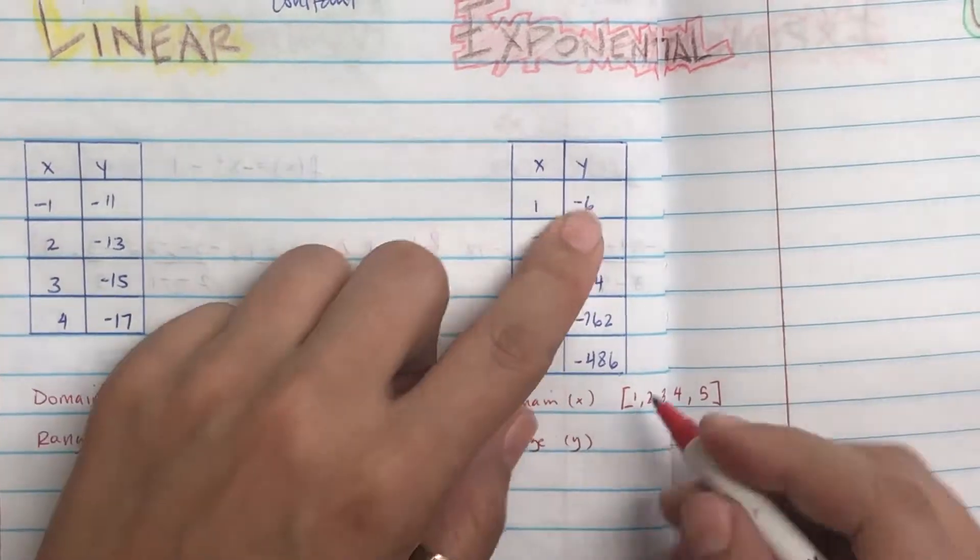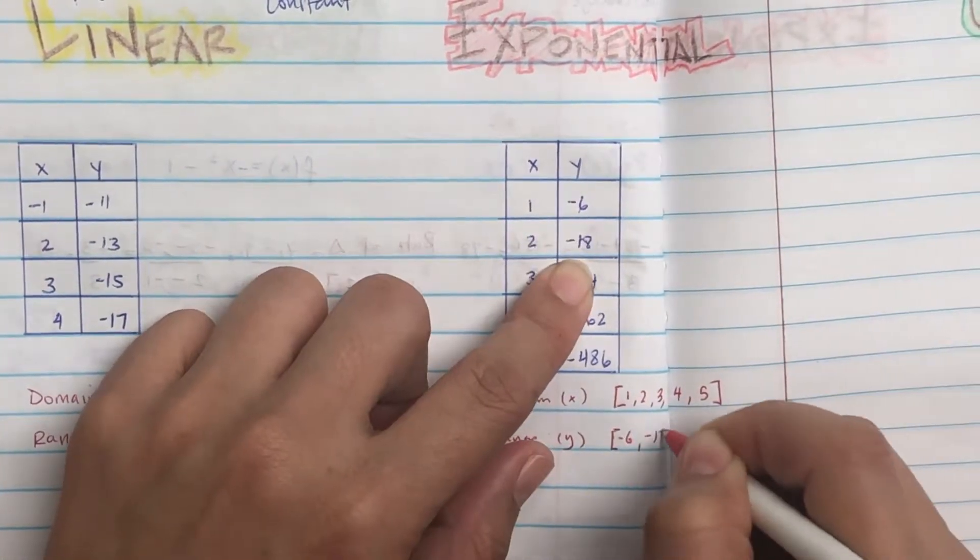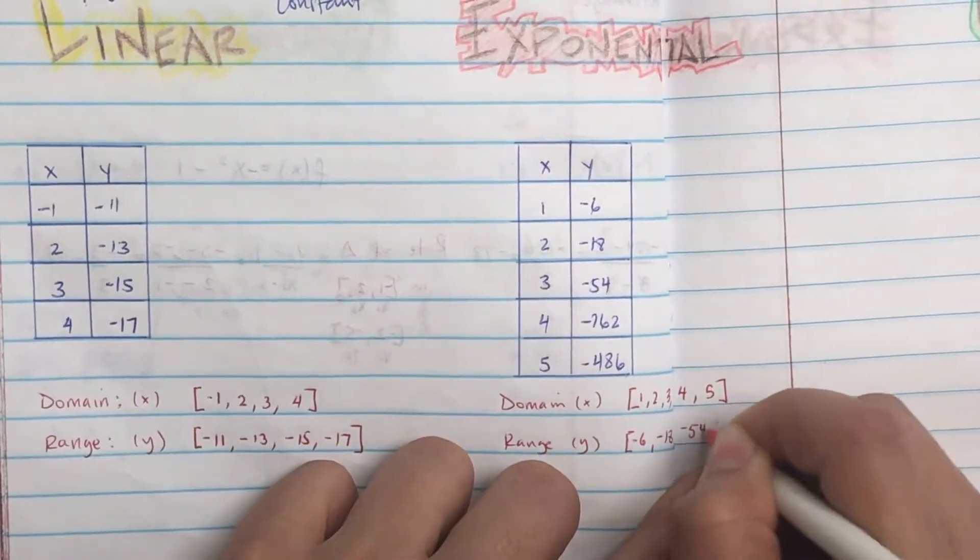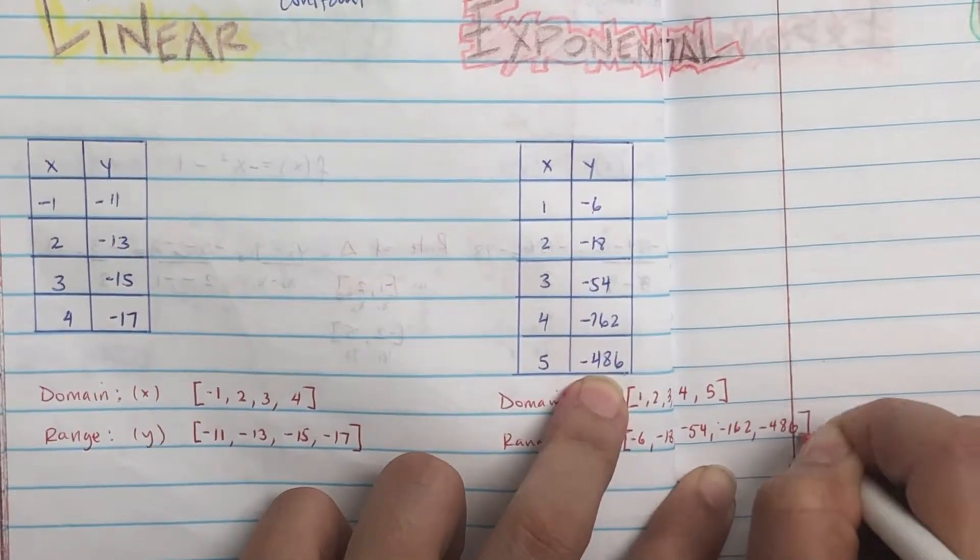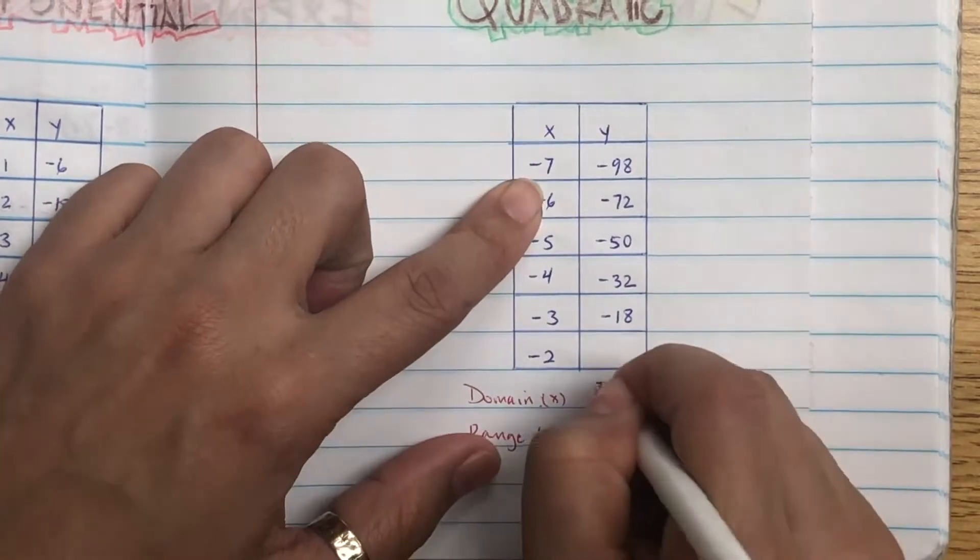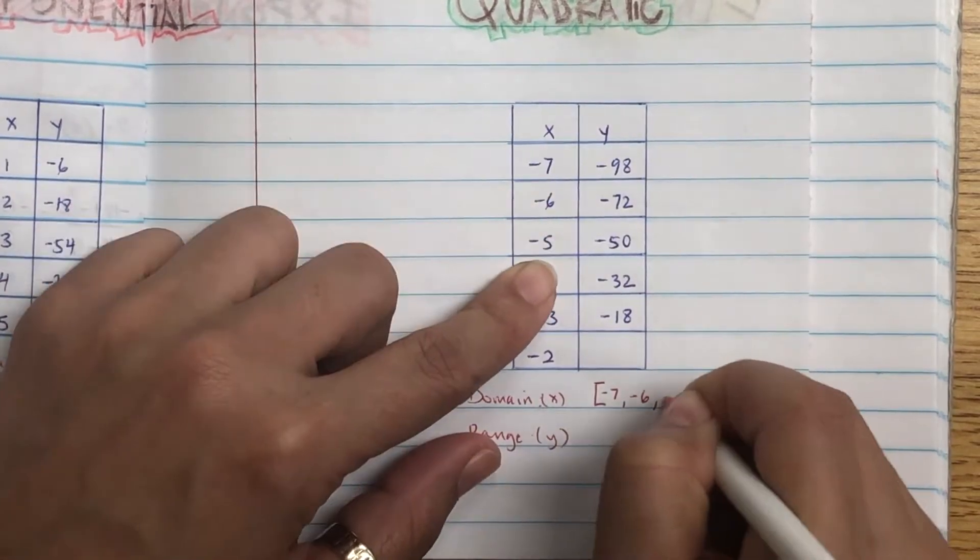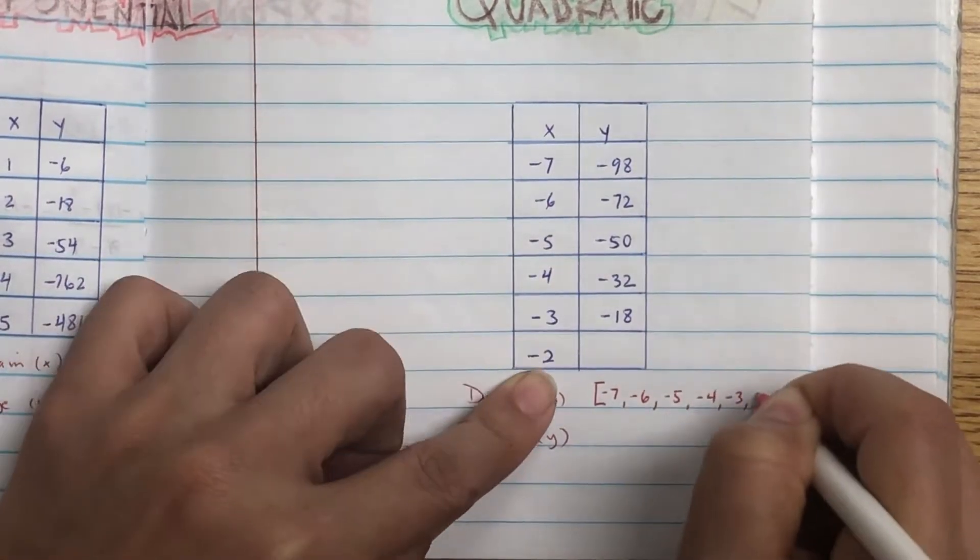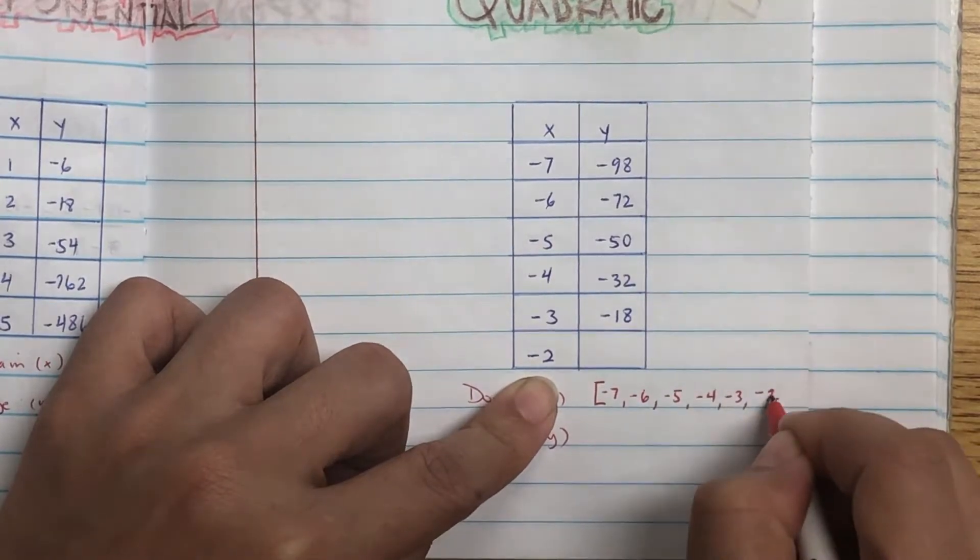This one, negative 6, negative 18, negative... this is a listening check: color in the part of the table that has 5 and negative 4, 8, 6. So if you're asked to find domain and range from a table, it's the easiest one. Just write all the x values in order, all the y values for the range.